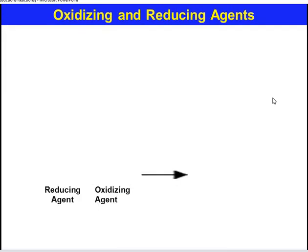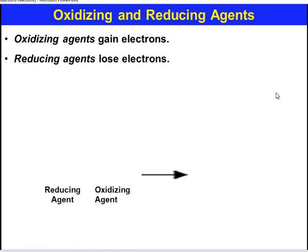Now, Oxidizing and Reducing Agents. Oxidizing Agents gain Electrons — they oxidize others and are themselves reduced. Reducing Agents lose Electrons — they reduce others and are themselves oxidized. Because both Reduction and Oxidation occur simultaneously, this is known as a Redox Reaction.